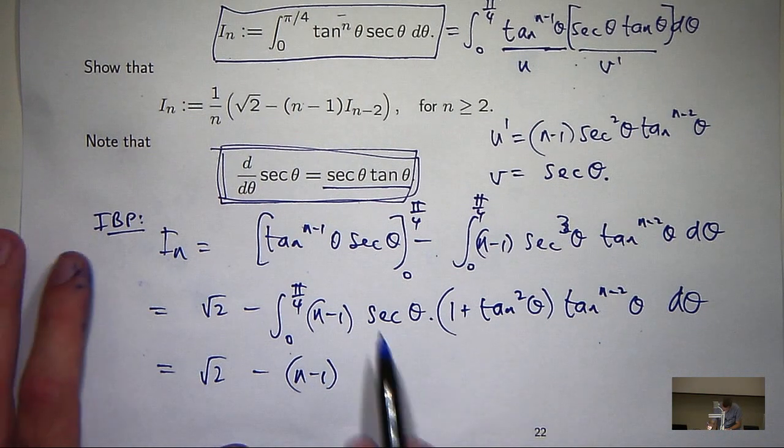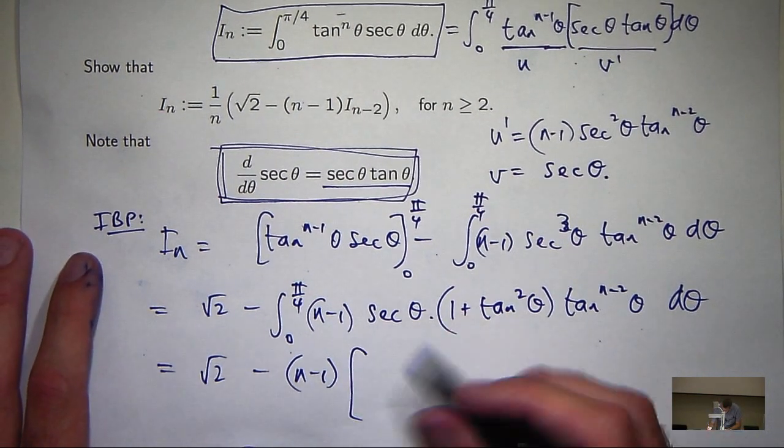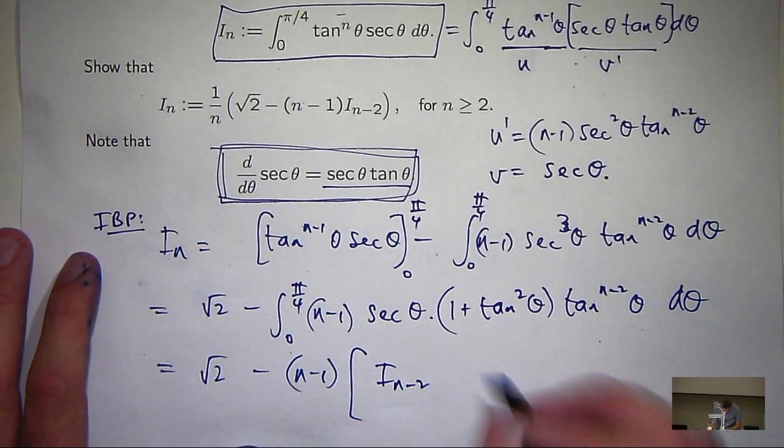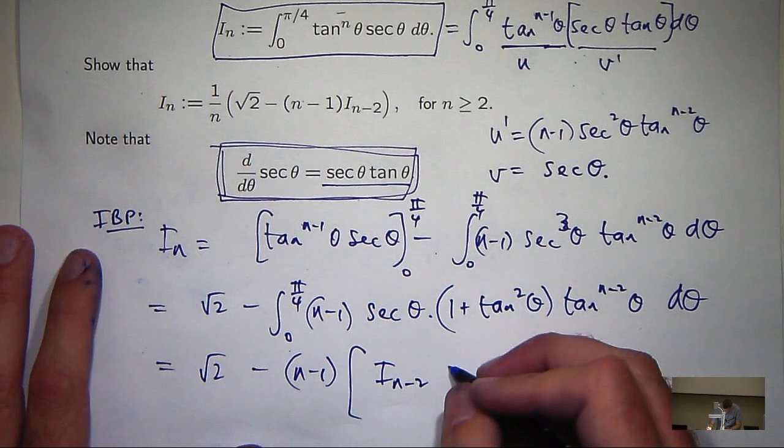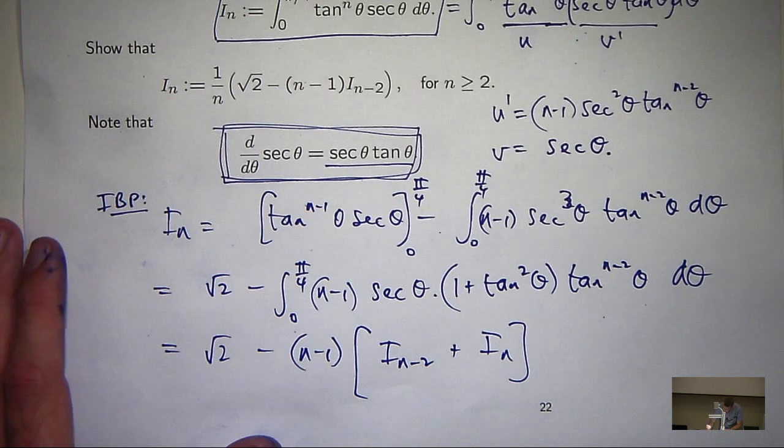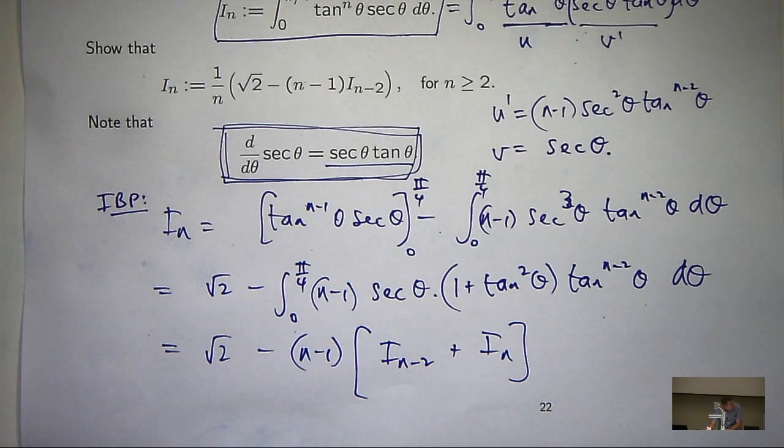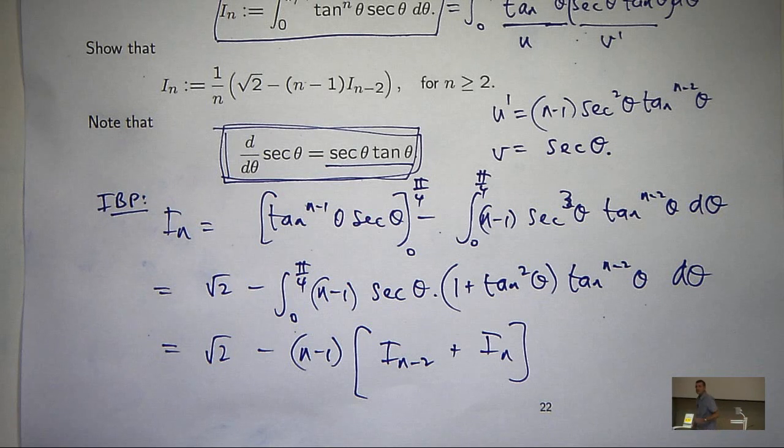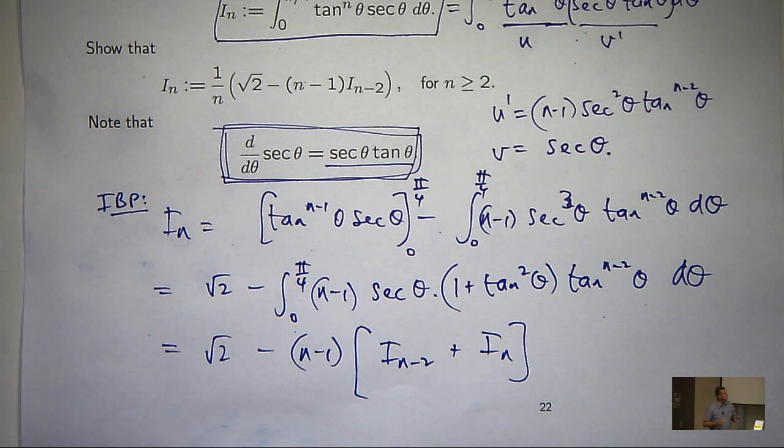So now we can try to simplify. What am I going to get here? I'm going to get i sub n minus 2 plus i sub n. So all I need to do now is rearrange that and I'm done. Make i sub n the subject. Rearrange it and you'll get the reduction formula that we're looking for.